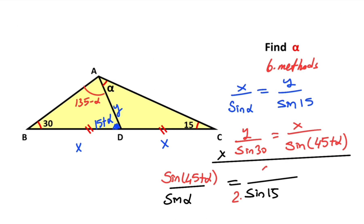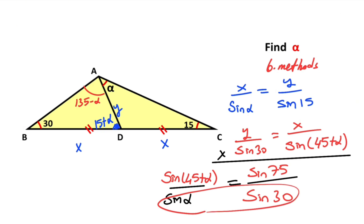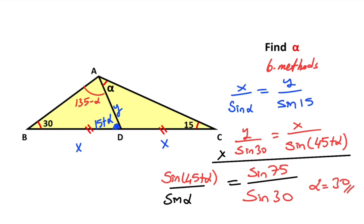Let's multiply numerator and denominator by cos(15°). Here must be equal to sin(30°), and we can calculate sin(75°) instead of cos(15°). Now you can see easily that alpha is going to be 30 degrees.